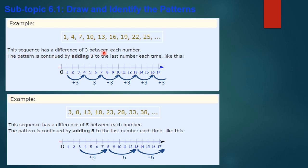This sequence has a difference of three between each number. You can check: after 1, four is coming — three is the difference between 1 and 4. After 4, seven is coming — three is the difference between 4 and 7. So it is the same in all the terms. The pattern is continued by adding three to the last number each time.